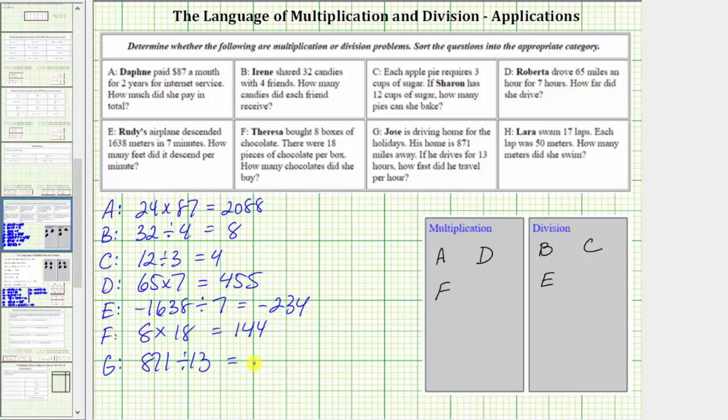871 divided by 13 equals 67. This quotient tells us Jose drove an average of 67 miles per hour. We perform division. We place G in the division box.